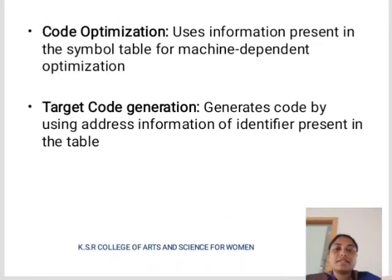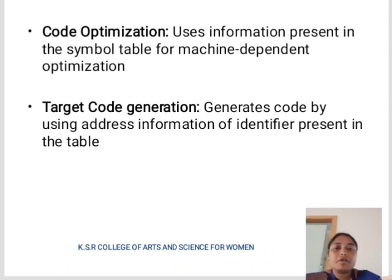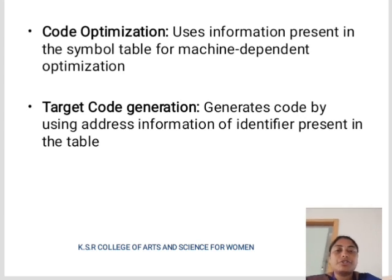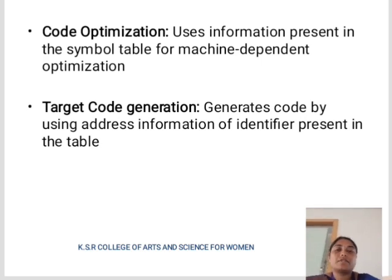Next one is code optimization. It uses information present in the symbol table for machine-dependent optimization. Next one is target code generation. It generates code by using address information of identifiers present in the tables.